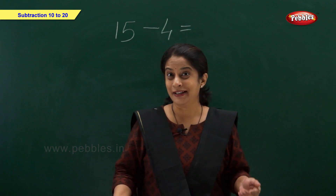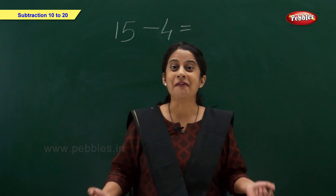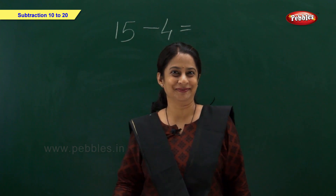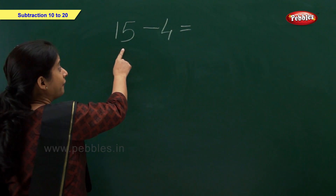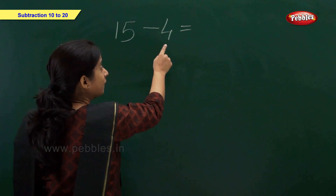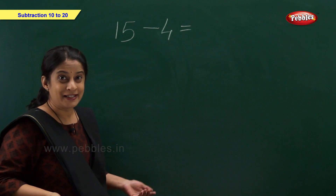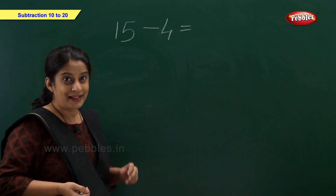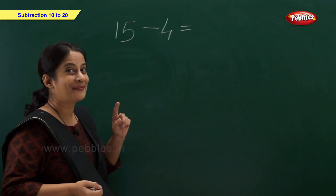Now let us do subtraction and find the answer. We have 15 minus 4. 15 means 1 ten and 5 ones.